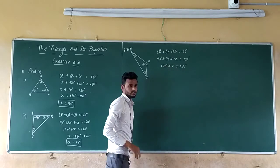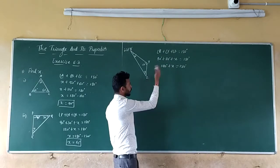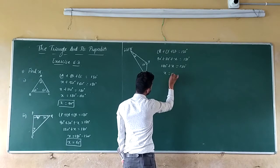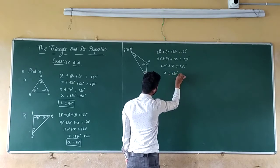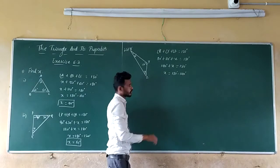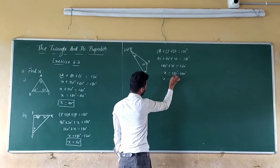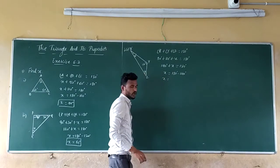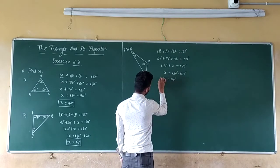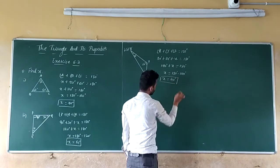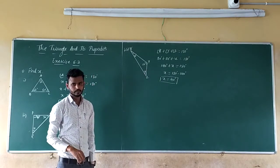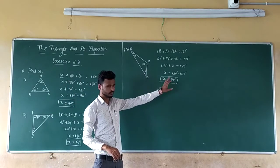So keep X on the LHS and take 140 to the RHS. So X is equal to 180 degrees minus 140 degrees, which is 40 degrees. So the answer of the third question is X is equal to 40 degrees.